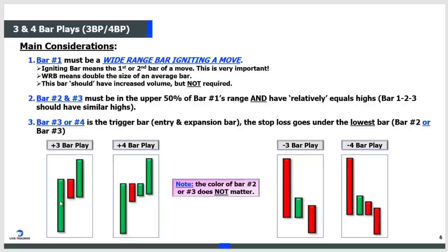The wick is part of the bar. The little topping tail or bottoming tail is part of the bar. This is just the body of the bar, but the entire range includes the wick on the candlestick. So if the body of the bar high is $50 but the total high including the wick is $50.20, you use $50.20, because that's the high of everything.